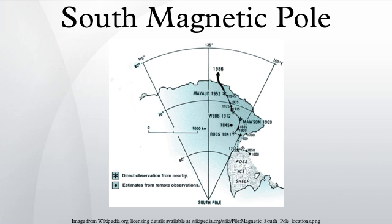Because the field is not an exact dipole, the south geomagnetic pole does not coincide with the south magnetic pole. Furthermore, the south geomagnetic pole is wandering for the same reason its northern magnetic counterpart wanders.